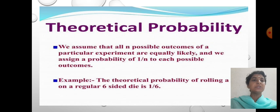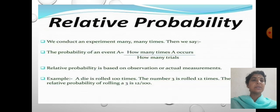Theoretical probability: we assume that all n possible outcomes of a particular experiment are equally likely, and we assign a probability of 1/n to each possible outcome. Example: the theoretical probability of rolling a 3 on a regular 6-sided die is 1/6.